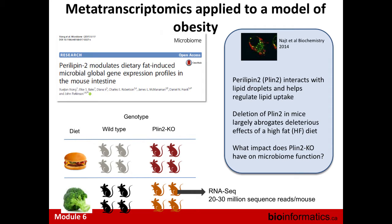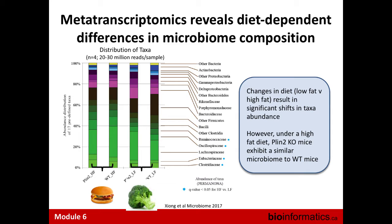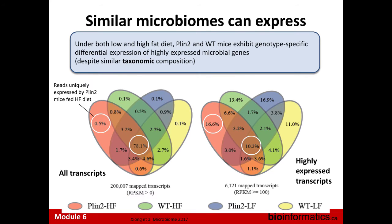For each mouse we took cecal content and generated around 20 to 30 million sequence reads using RNA-seq, then pushed them through our pipeline. The first thing we looked at was the taxonomic abundance across these four types of mice. While there are differences between high fat and low fat diets in terms of differentially expressed taxa, when looking at the two genotypes on the same diet we found no significant differences in the taxonomic breakdown - the genotype doesn't seem to impact the types of bacteria present.